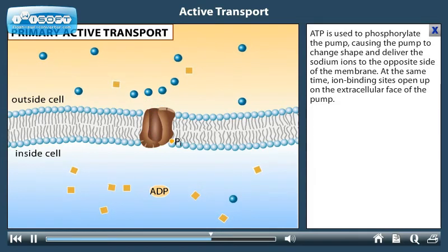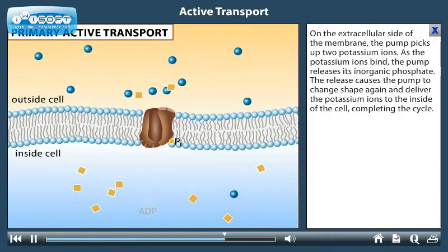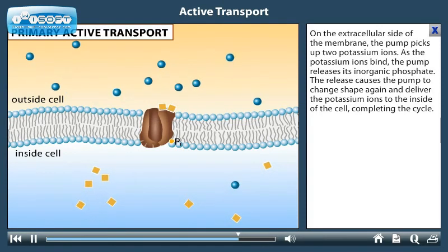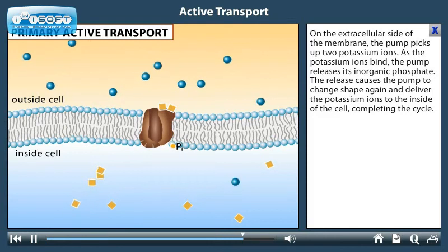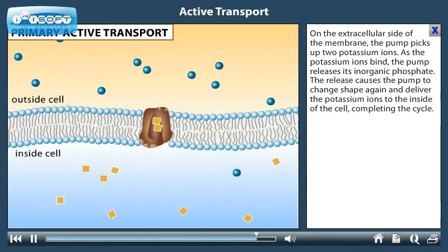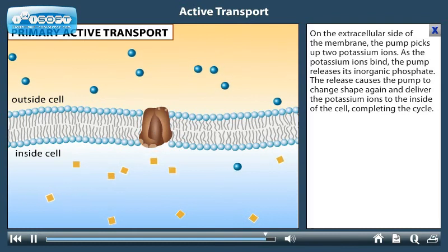At the same time, ion binding sites open up on the extracellular face of the pump. On the extracellular side of the membrane, the pump picks up two potassium ions. As the potassium ions bind, the pump releases its inorganic phosphate. The release causes the pump to change shape again and deliver the potassium ions to the inside of the cell, completing the cycle.